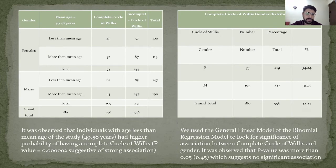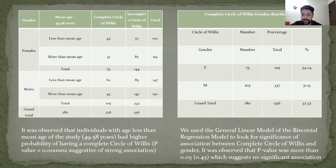The mean age of our study was 49 to 58 years. It was observed that individuals with age less than the mean age of the study had a higher probability of having a complete circle of villas. Using the binomial regression model to look for significance and association between complete circle of villas and gender, it was observed that the p-value was more than 0.05, which suggests no significant association.